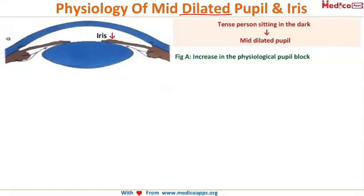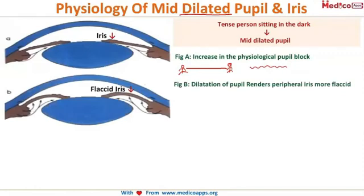To understand this clearly, imagine a piece of cloth held tightly by two people from either side — it is very taut. But when they let it loose, it becomes flaccid. The same applies here: when the pupil is constricted, the iris is taut and extended, but when it is dilated, it becomes flaccid.